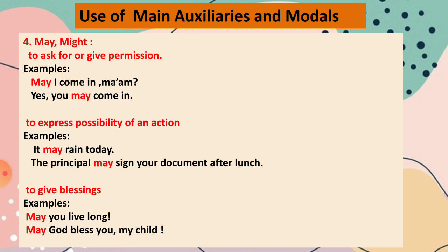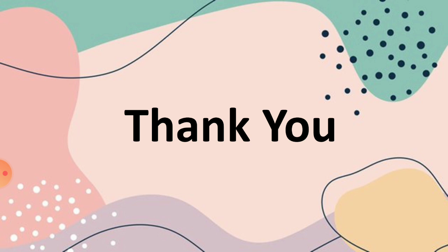So today we have seen the use of the to-be forms of verbs, has, have, had, can, could, may, might, do, does, did. In our next video, we will be discussing more modals and their use. This is all for today. I hope you have understood the topic. Thank you.